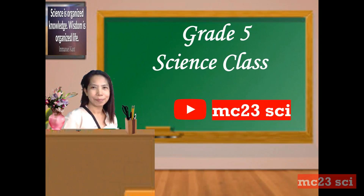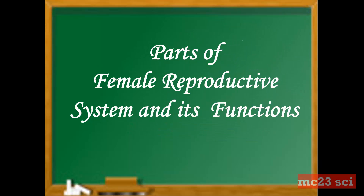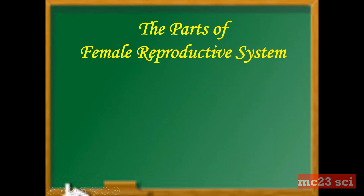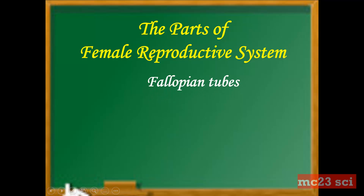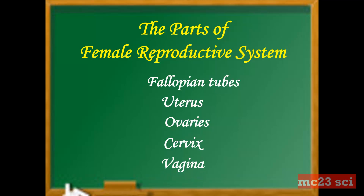Welcome to grade 5 science class. Today, we're going to discuss the female reproductive system and its functions. The parts of the female reproductive system are the fallopian tubes, the uterus, the ovaries, the cervix, and the vagina.